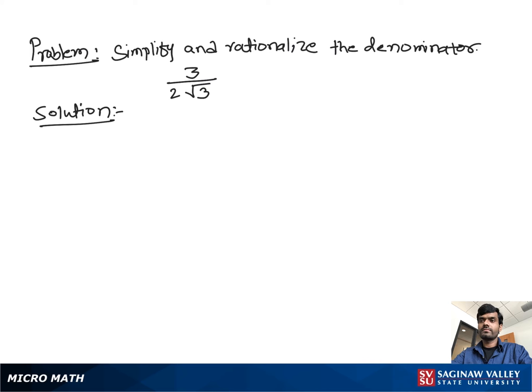Simplify and rationalize the denominator: 3 over 2 times square root of 3. To make the denominator a rational number, we have to remove the radical sign — the square root — from 3. We don't have to do anything with the 2.